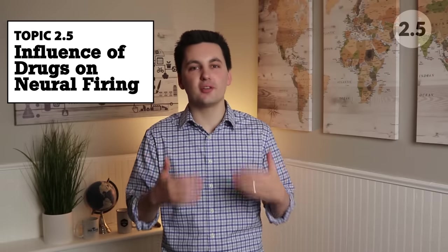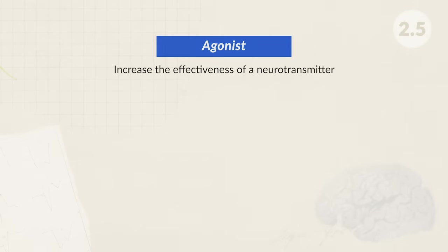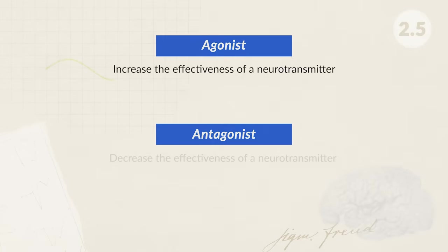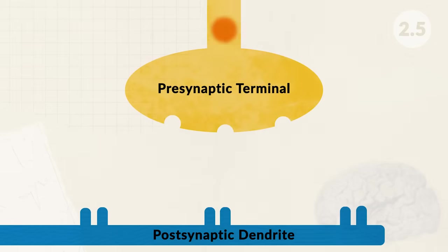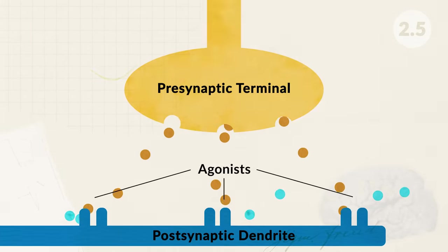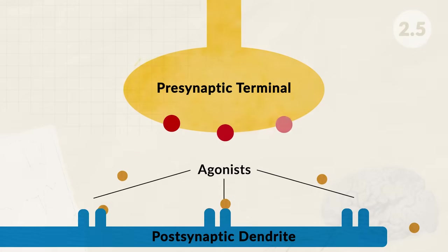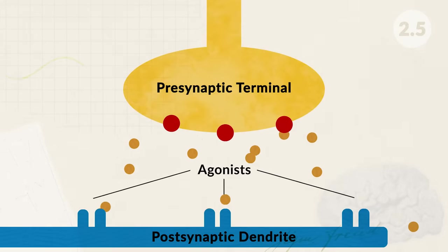2.5 is all about drugs and their impact on neural firing. We're going to start by reviewing the difference between agonist and antagonist drugs. Agonist drugs increase the effectiveness of a neurotransmitter, while antagonist drugs decrease the effectiveness of a neurotransmitter. Agonists bind to the receptors in the synapse and increase the effectiveness of the neurotransmitter by mimicking them, increasing the production of the neurotransmitter, or by blocking the reuptake that would usually absorb the extra neurotransmitters — making them more available in the synapse.